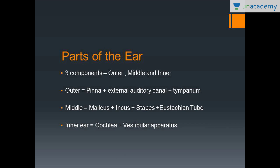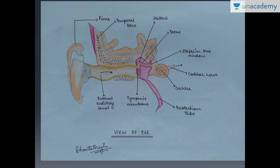The ear consists of three components: the outer, middle, and inner ear. The outer ear includes the pinna, external auditory canal, and the tympanum (eardrum). The middle ear consists of the malleus, incus, stapes, and the Eustachian tube. The inner ear consists of the cochlea and the vestibular apparatus. The Eustachian tube connects the middle ear to the nose, and its main function is to maintain equal pressure on both sides of the tympanic membrane so that sound waves vibrate it correctly.